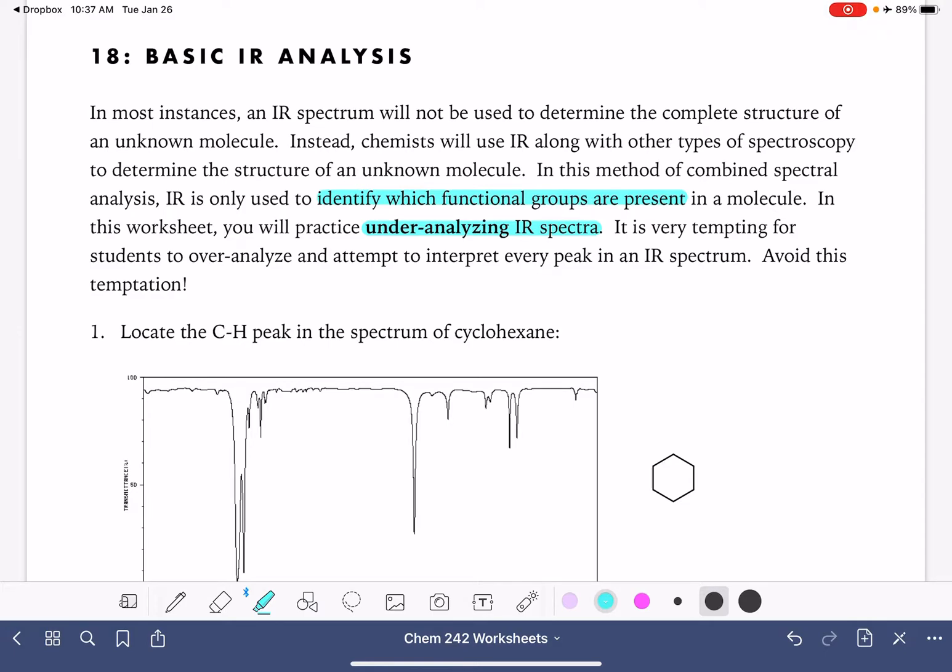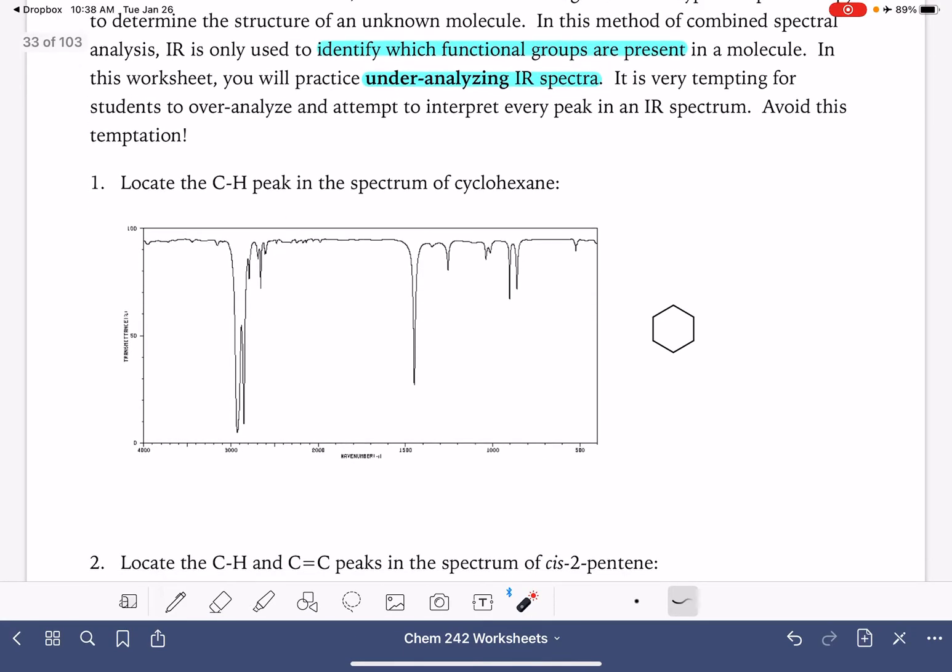The other option that we have when we're using IR is if we're dealing with a molecule that we are pretty sure we know what it is, we just need some verification. We can take the IR spectrum of that sort of an unknown molecule and we can compare it to what we would expect the spectrum to be. So we're sort of referencing, using the IR as a reference. But in this particular video, on this particular worksheet, we're really just going to be focusing on using IR to help us identify which functional groups are present in the molecule, and we're just going to look at a lot of spectra.